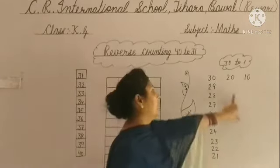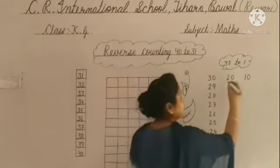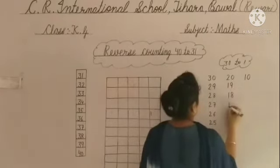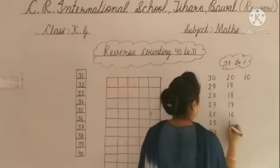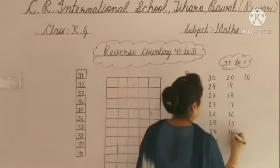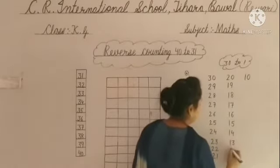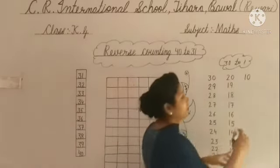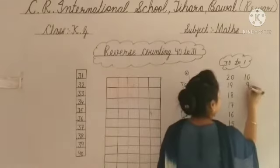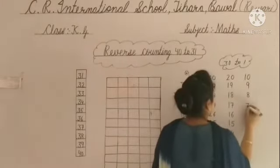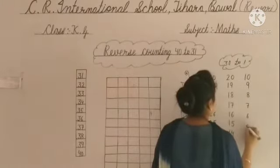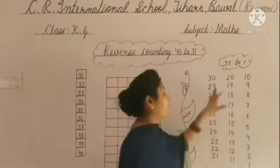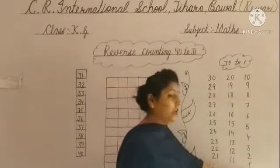अब 21 से before क्या है? 20 से before 19, 18, 17. 17 से before 16, 15, 14, 13, 12, and 11. अब 11 से before क्या होता है? 10. 10 से before: 9, 8, 7, 6, 5, 4, 3, 2, 1. हो गई हमारी 32 to 1 की reverse counting.